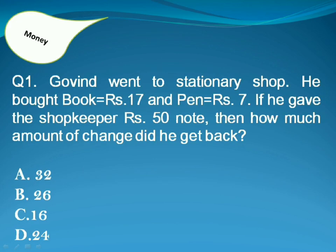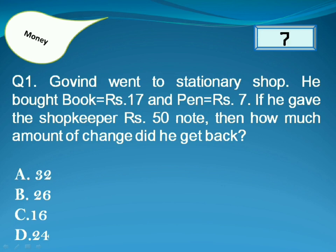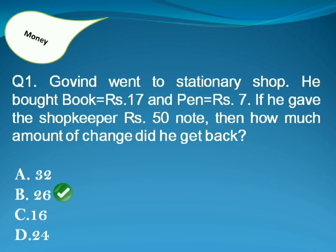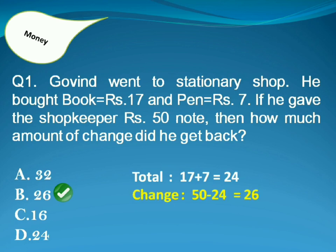Govind went to a stationery shop. He bought books for 17 rupees and a pen for 7 rupees. If he gave the shopkeeper a 50 rupee note, then how much amount of change did he get back? Answer is Option B. As 17 plus 7 is equal to 24 and he gave a 50 rupee note, so the balance is 26 rupees.